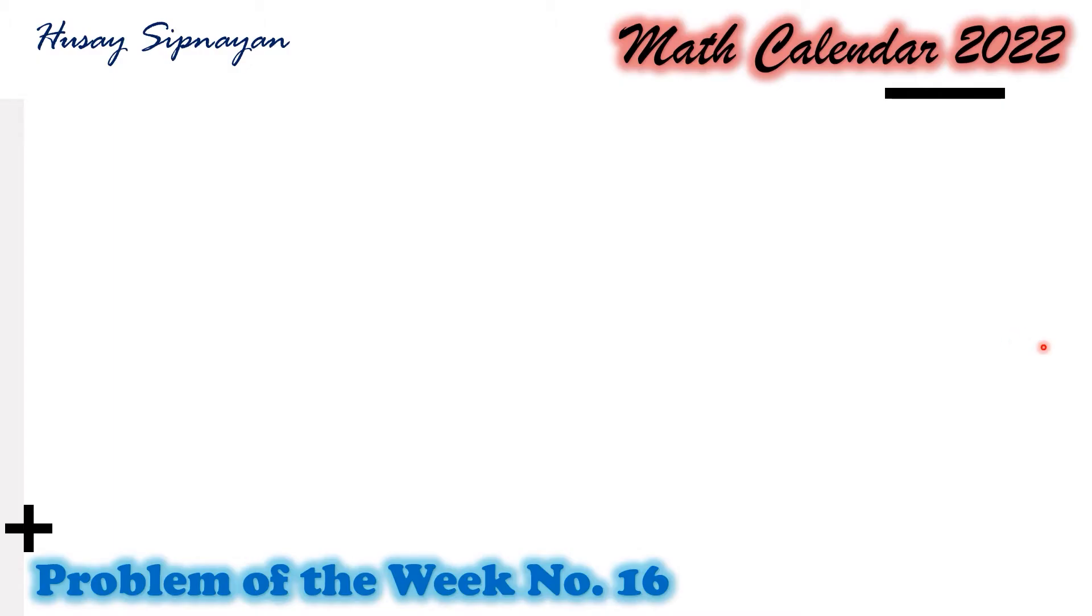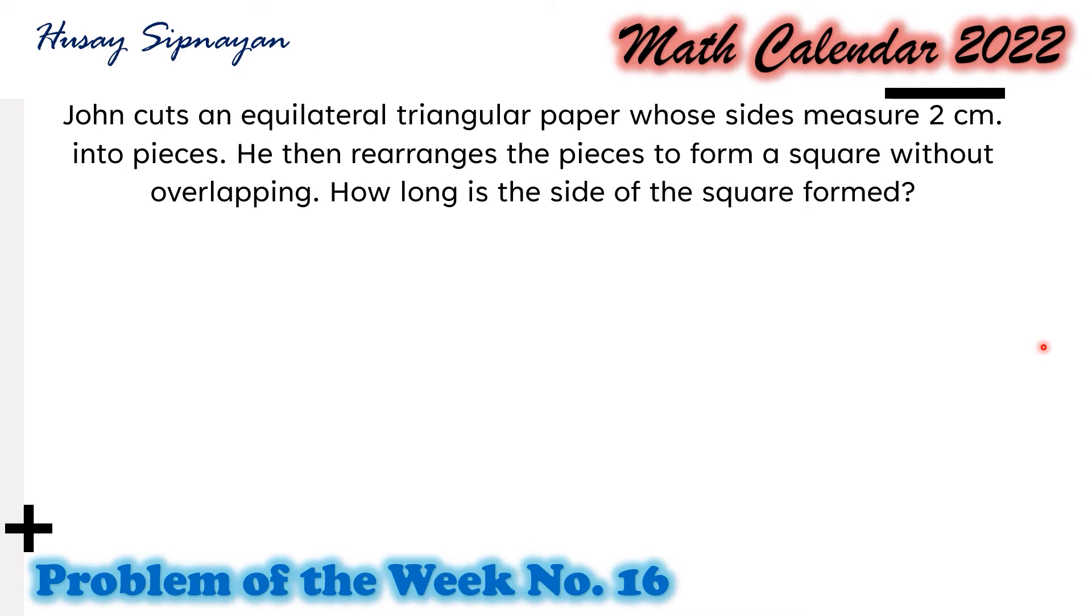Here now is our featured problem for Week 16. John cuts an equilateral triangular paper whose sides measure 2 cm into pieces. He then rearranges the pieces to form a square without overlapping. How long is the side of the square formed?